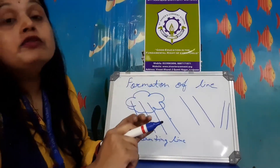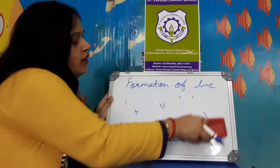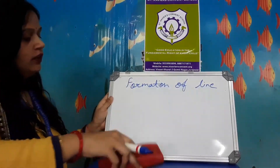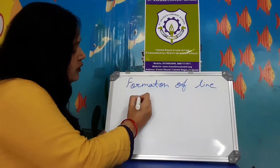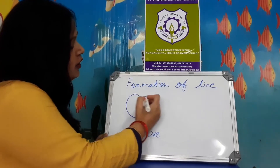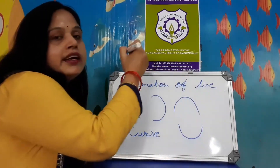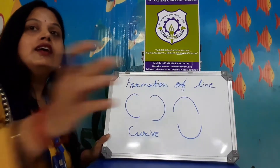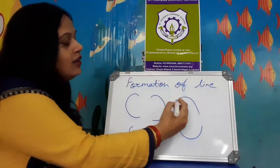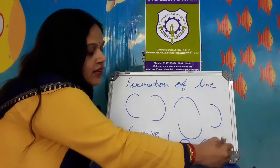Now the next line — curve. Right side, left side, upper side, down side — this is a curve. Upper curve, down curve. Like this. This is a curve.